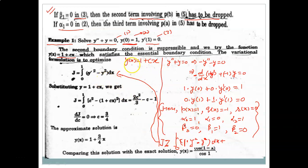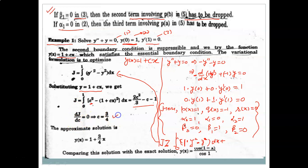We use the choice function y(x) = 1 + cx. We need not worry about the suppressible boundary condition. Here y' = c, so y'² = c². And y² = (1 + cx)². Substituting into J and integrating from 0 to 1 gives J = 2c²/3 - c - 1. Setting dJ/dc = 0 gives c = 3/4.